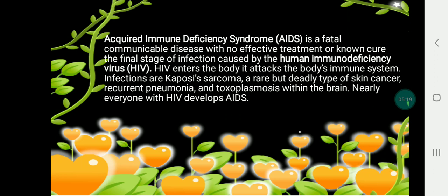Acquired Immune Deficiency Syndrome, or AIDS, is a fatal communicable disease with no effective treatment or cure. It is the final stage of infection caused by the Human Immunodeficiency Virus, or HIV. HIV enters the body and attacks the immune system. Related infections include Kaposi's sarcoma — a rare but serious type of skin cancer — recurrent pneumonia, and toxoplasmosis within the brain. Nearly everyone with HIV eventually develops AIDS.